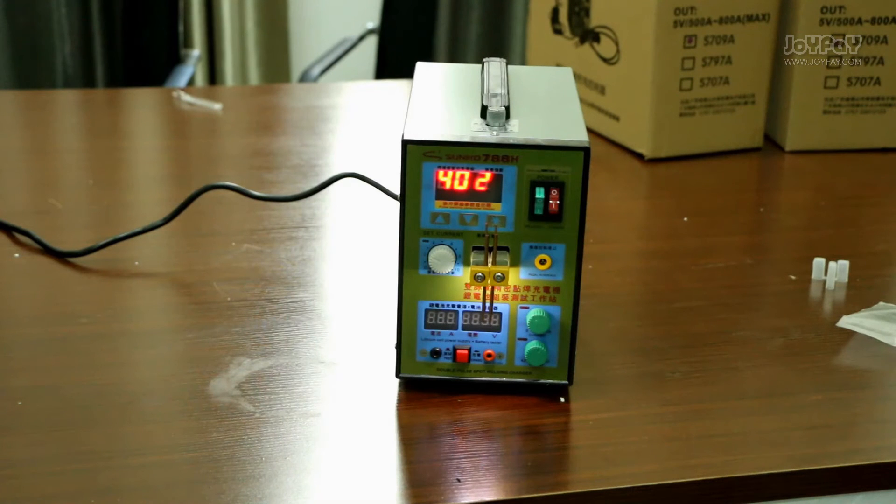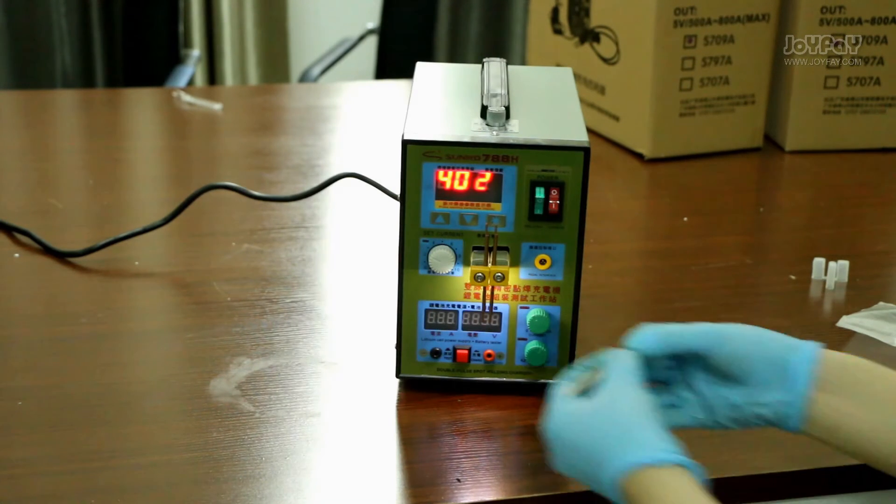Now we will start to use the machine. There are two welding methods. The first one is lighting up the fixed welding pad.